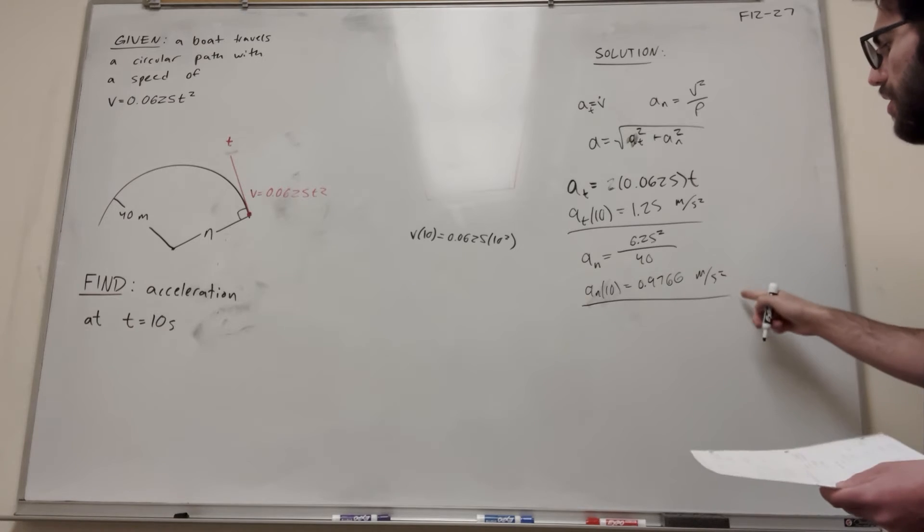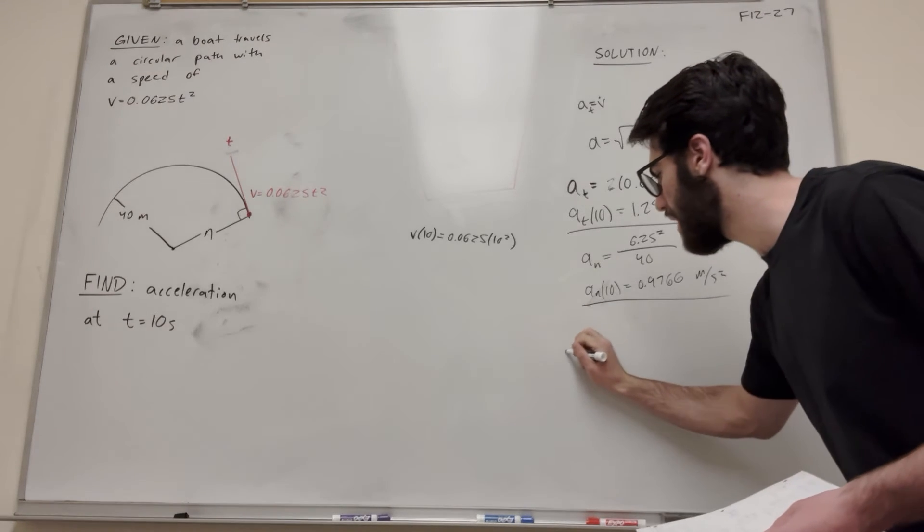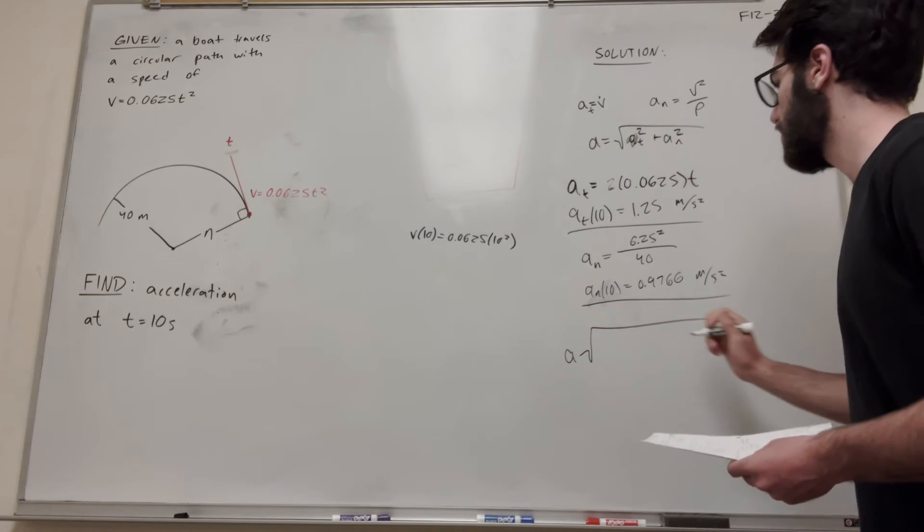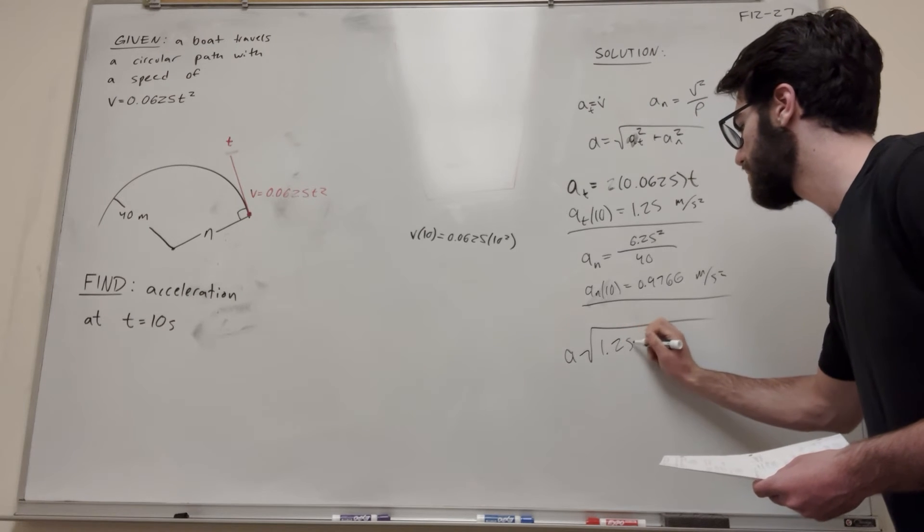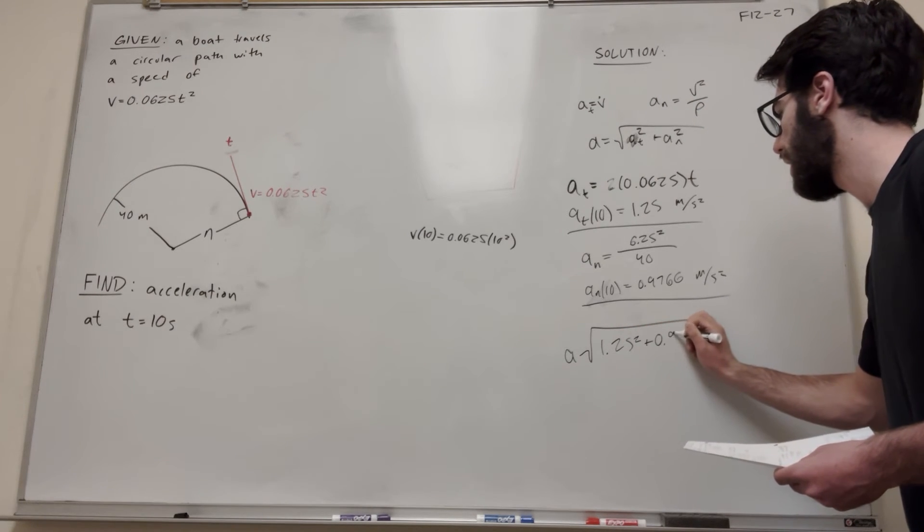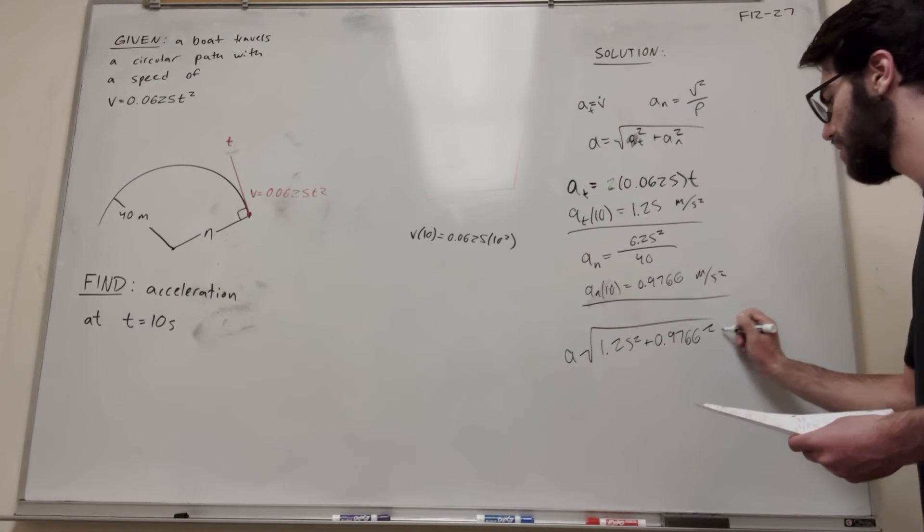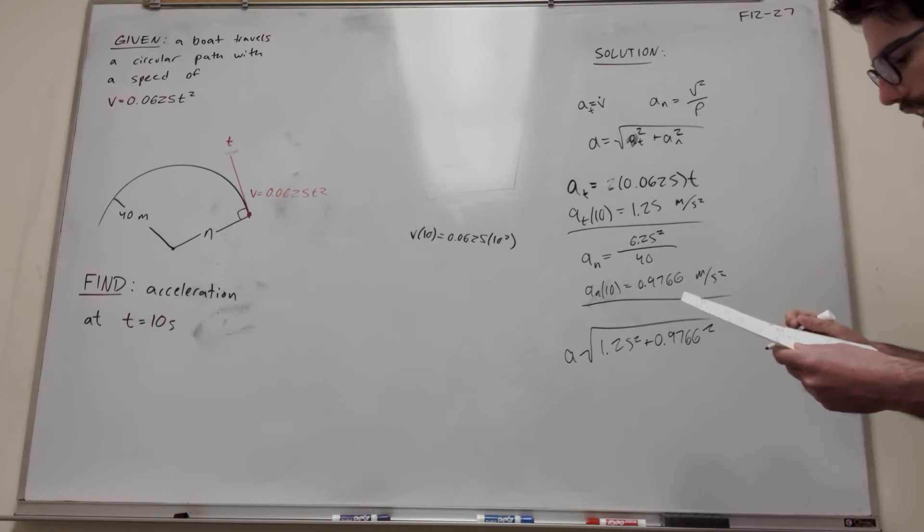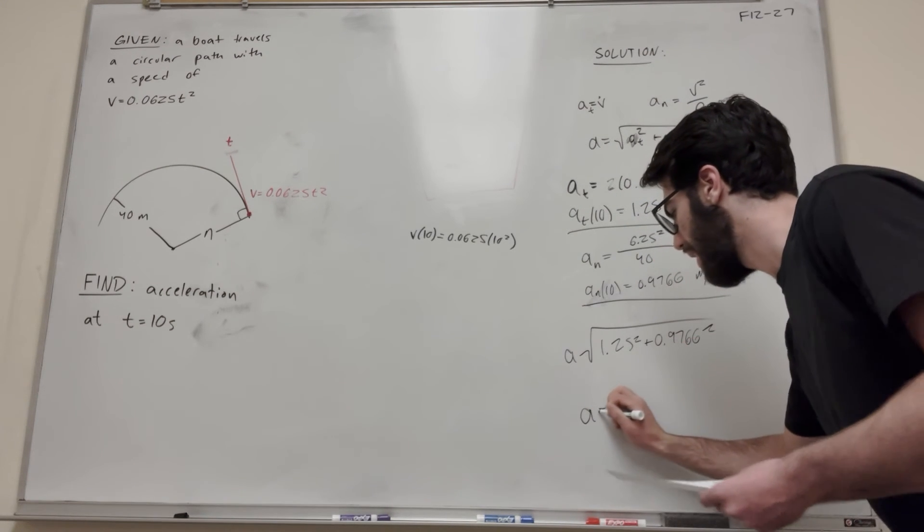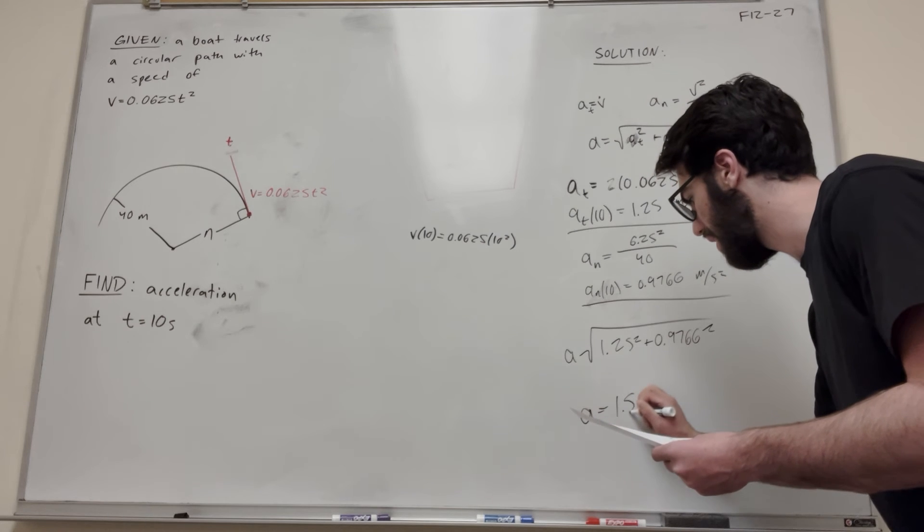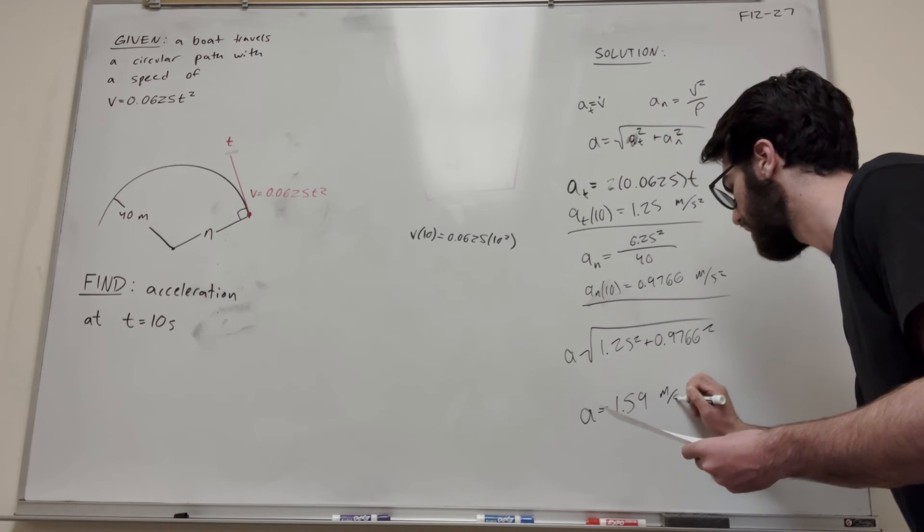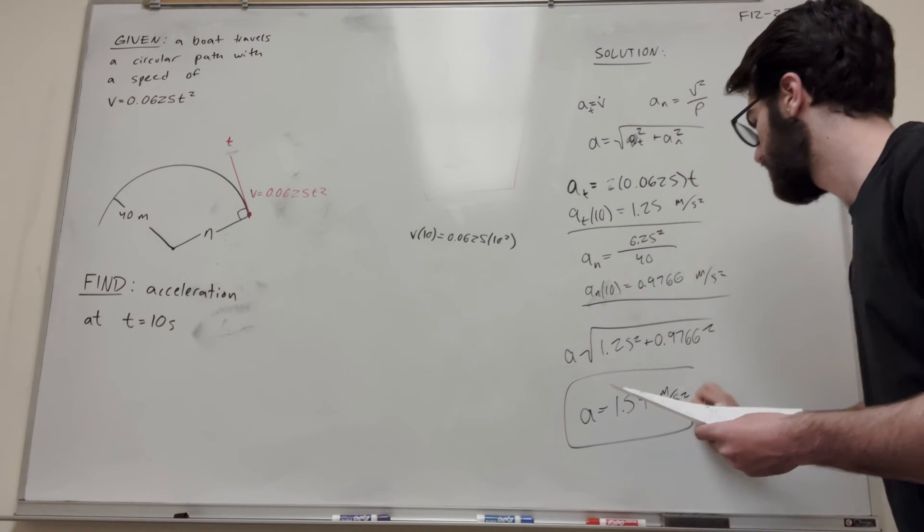We have tangential acceleration, normal acceleration. To find the magnitude of that, we're just going to take the square root of both of them. That's going to be 1.25 squared plus 0.9766 squared. You do that, you get that the magnitude of the acceleration is 1.59 meters per second squared. And that's your final answer.